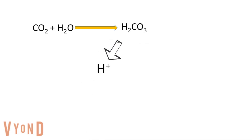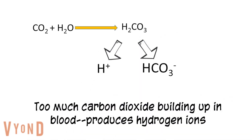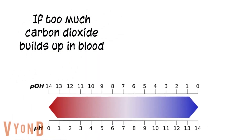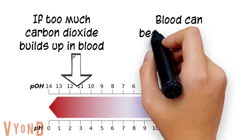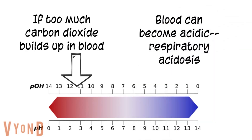Since this reaction also occurs in the blood, but without carbonic anhydrase, a buildup of carbon dioxide in the blood can have an effect on blood pH, because of the production of hydrogen ions. If the respiratory system cannot get rid of carbon dioxide, more hydrogen ions are produced, causing the pH to go down. The blood can become acidic in a condition known as respiratory acidosis.